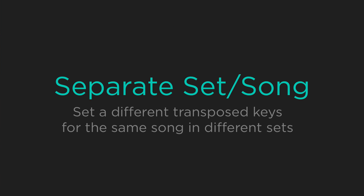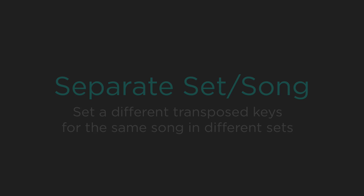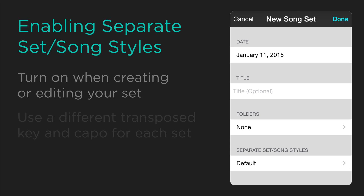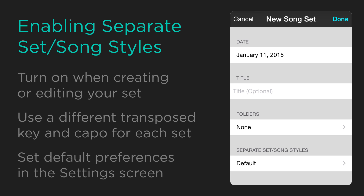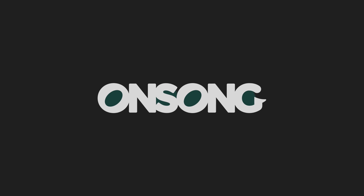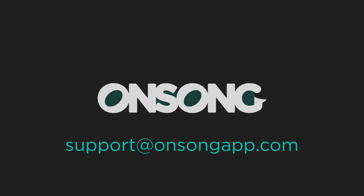You can also set the key of the song differently in one set versus another, as long as you use the separate song set styles option. This can be accessed when you create a set, or you can set the default in settings. I hope that gives you an overview of the changes coming to SongSelect integration in OnSong. If you have any questions, be sure to contact us at support@onsongapp.com.